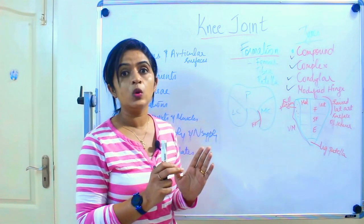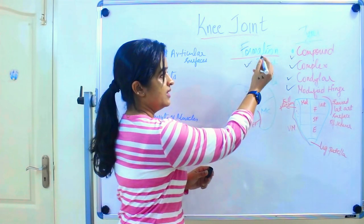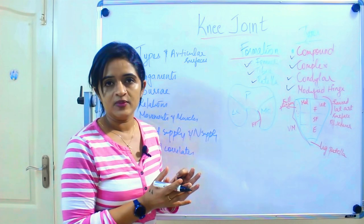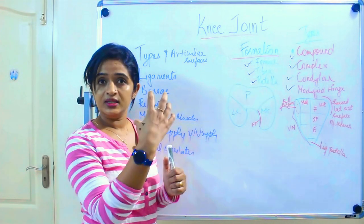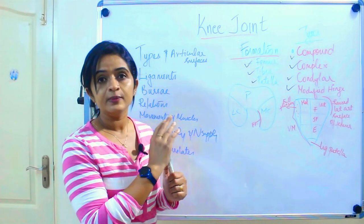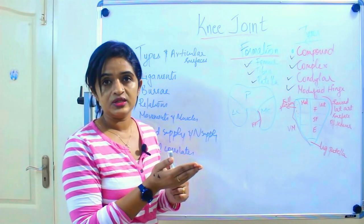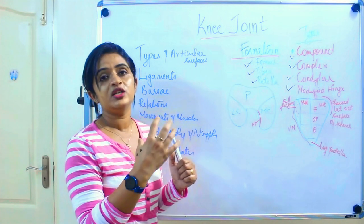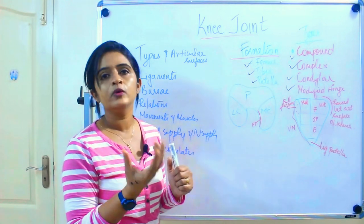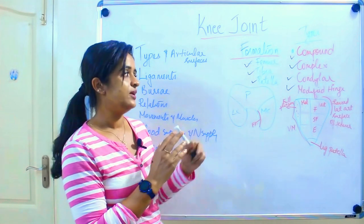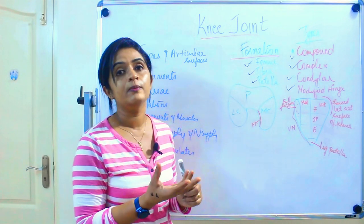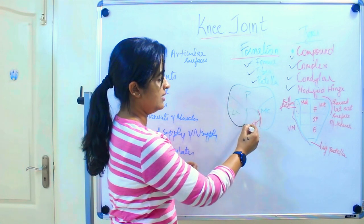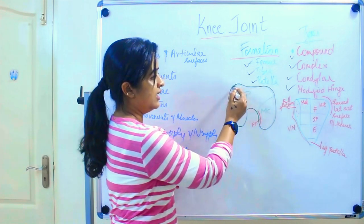The three bones forming the knee joint are the femur, tibia, and patella. The patella is seen on the anterior aspect of the knee joint, articulating with the anterior surface of the lower end of the femur. It is said that the patella does not actually form the knee joint itself but protects it from the anterior aspect — even if you remove the patella, you will still have a stable knee joint.